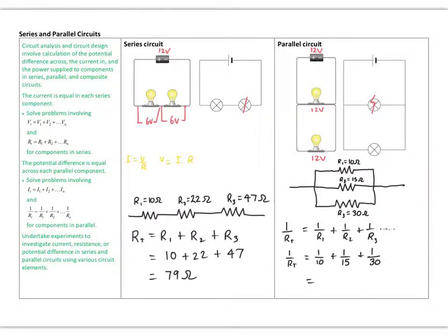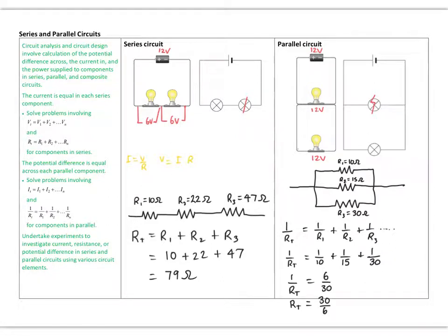Adding those fractions — 1/10 = 3/30, 1/13 ≈ 2/30 (using common denominator), and 1/30 — gives 6/30. You can use a calculator for this. So 1/R_total = 6/30, and taking the reciprocal gives R_total = 30/6 = 5 ohms. That's the process for calculating total resistance in a parallel circuit.